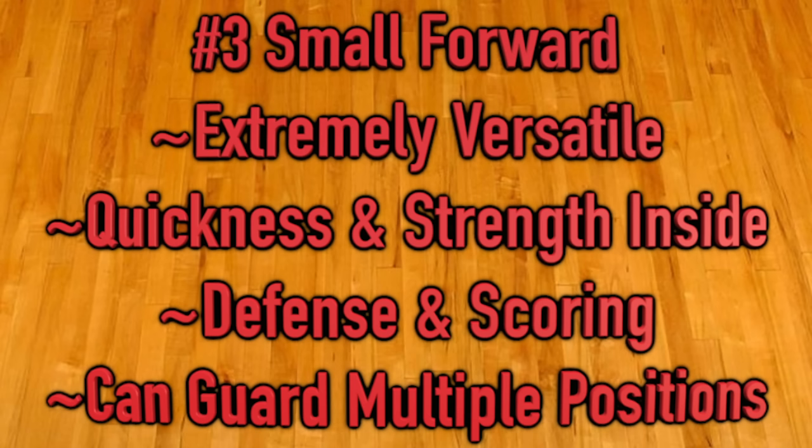On to the third position: the small forward, also called the three. Small forwards tend to be anywhere from six-foot-six to six-nine in the NBA, so not exactly small by the dictionary definition. The key word to describe this position is versatility — they do a little bit of everything on the basketball court. Small forwards have a variety of assets such as quickness and strength inside. They're basically like a slightly stronger and taller version of the shooting guard, and they set up on the wings. Some small forwards are more defensive-minded while others can be pure scorers.